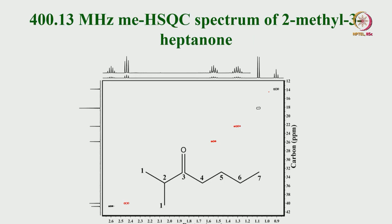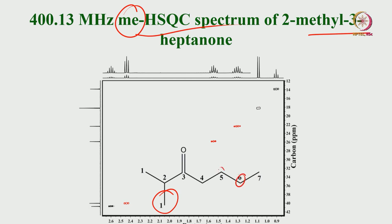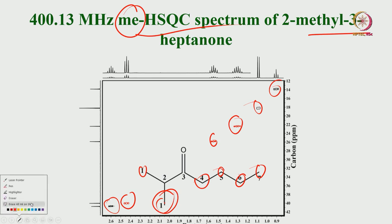For 2-methyl-3-heptanone at 400.13 MHz multiplicity-edited HSQC: an extra methyl group is added compared to the previous molecule. Now there are 3 CH2 groups (negative/red) and 3 CH3 groups (positive). The CO carbon gives no signal. This confirms how easily CH2 and CH3 carbons are identified based on sign in the multiplicity-edited spectrum.